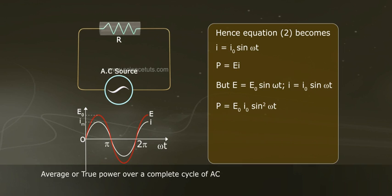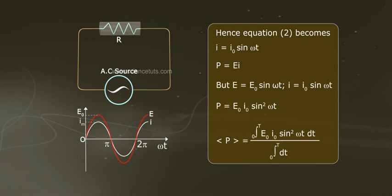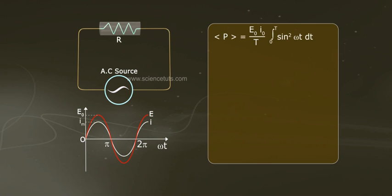Average or true power over a complete cycle of AC is P. P equals to integration from 0 to t of E₀I₀ sin² ωt dt by integration from 0 to t of dt.